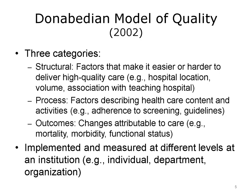Donabadian developed a model of quality with three categories of quality measures. The first category is structural measures, which are factors that make it easier or harder to deliver high-quality care, such as hospital location, patient volume, and whether the hospital is associated with a teaching institution. The second category is process measures, which describe health care content and activities, such as how much screening is done and the degree of adherence to established practice guidelines. Finally, there are outcome measures, which are changes attributable to care, such as mortality rate, morbidity, and functional status.